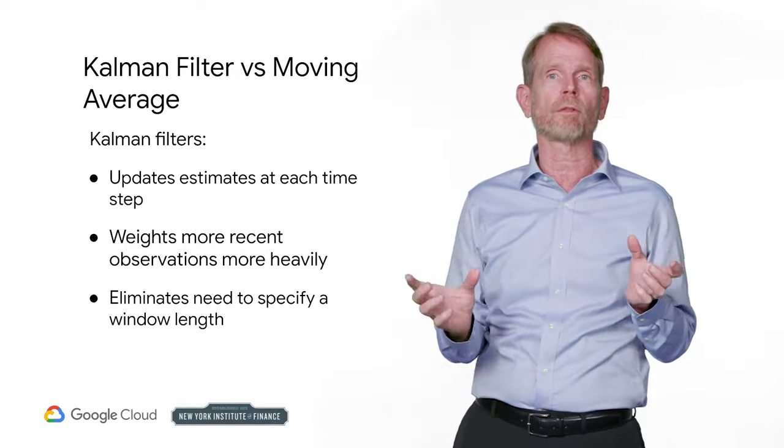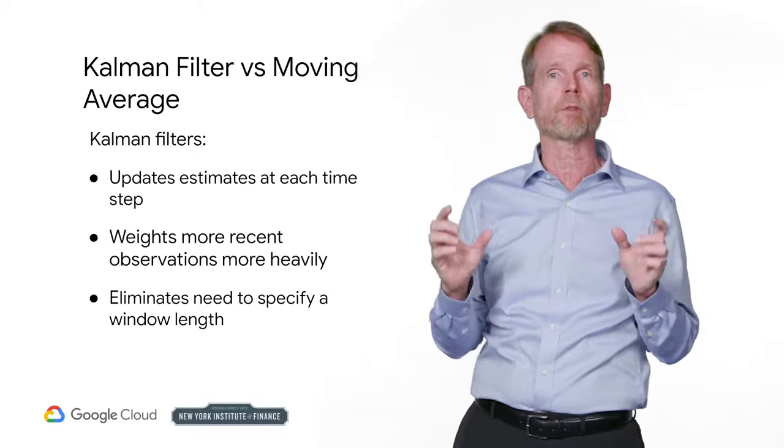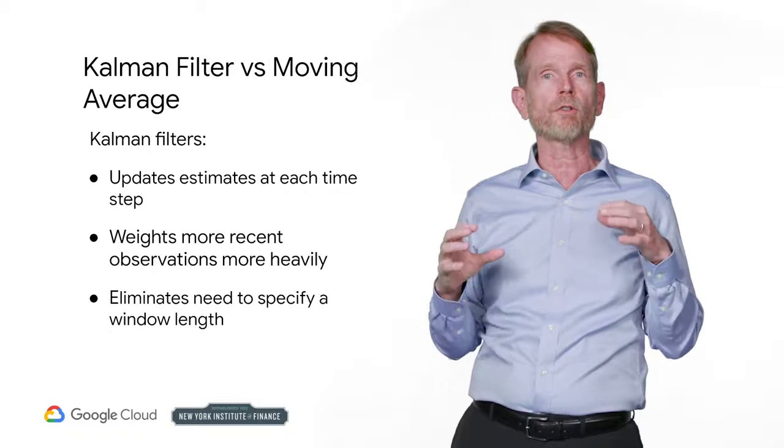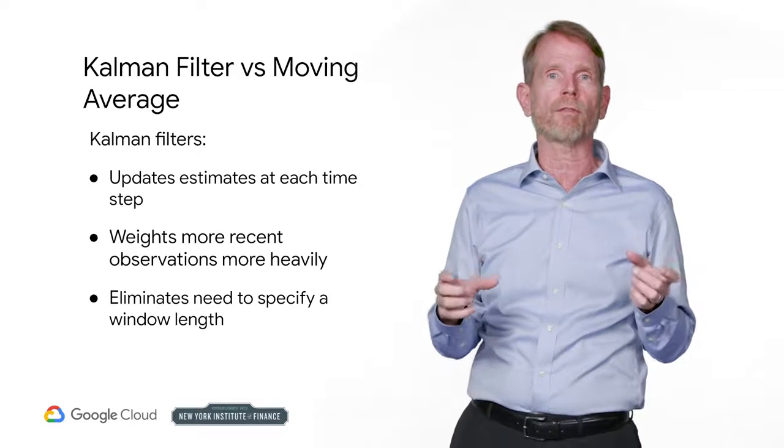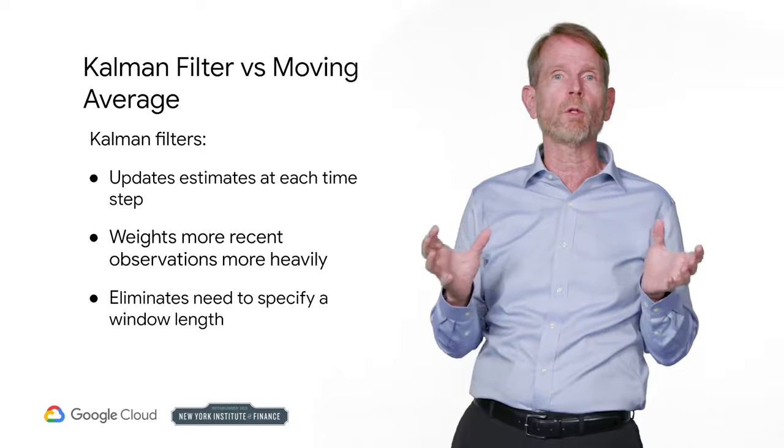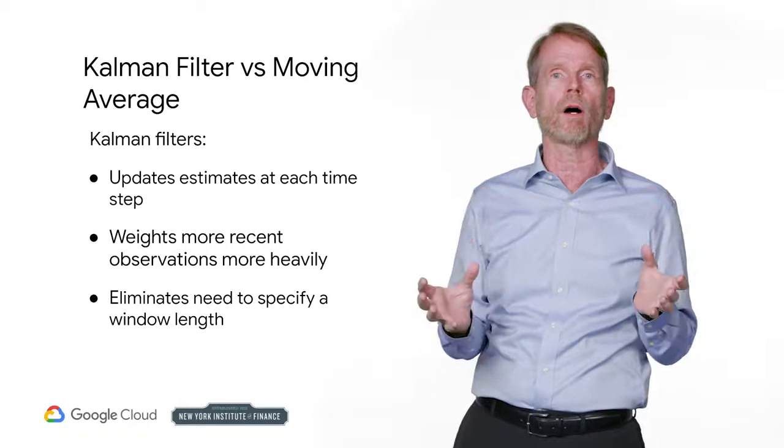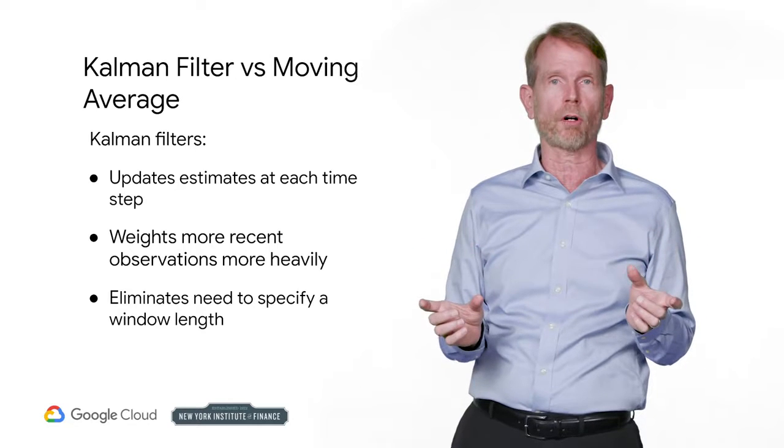When using a Kalman filter there is no window length that you need to specify. This is useful for computing the moving average if that is what you are interested in or for smoothing out estimates of other quantities such as the moving Sharpe ratio.